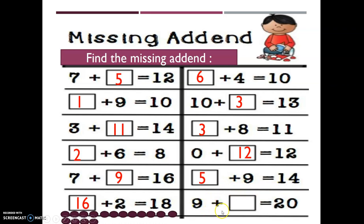Now the last question: nine wants to go to its mommy twenty. Do you have enough fingers? I'm not sure, so I will move nine on circles. After nine: ten, eleven, twelve, thirteen, fourteen, fifteen, sixteen, seventeen, eighteen, nineteen, twenty. I reached twenty — let's count the circles: one, two, three, four, five, six, seven, eight, nine, ten, eleven. So the missing baby, the missing add-on, is eleven. Baby nine plus baby eleven equals mommy twenty.